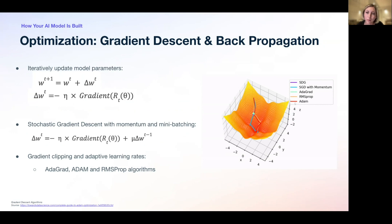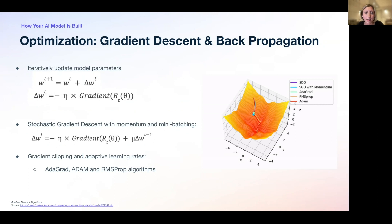Gradient descent — or steepest descent — starts with some initial guess of the weights and at each iteration moves a short distance in the direction of greatest rate of decrease of the error function. The updated parameters bring us closer to those that minimize the function. The update term Δw_t includes eta (η), the learning rate: the gradient tells us the direction of change, evaluated at every iteration, while the learning rate tells the optimizer how quickly the parameters are updated. The learning rate is one of the hyperparameters the researcher must decide on when setting up the model.